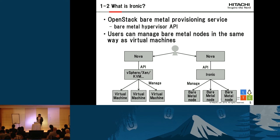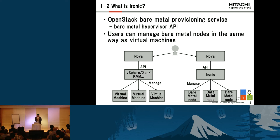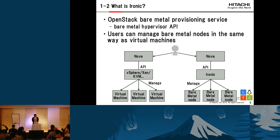What is Ironic? Maybe you guys know Ironic, but I'll explain again. Ironic is the OpenStack bare metal provisioning service, and it's like a bare metal hypervisor API. Via this API, users can manage bare metal nodes in the same way as virtual machines. This picture shows it. On the left side there's a hypervisor that manages virtual machines and provides a management API to Nova. On the right side there's Ironic, which manages bare metal nodes and provides management API to Nova. So users can control virtual machines and bare metal nodes via the Nova API.